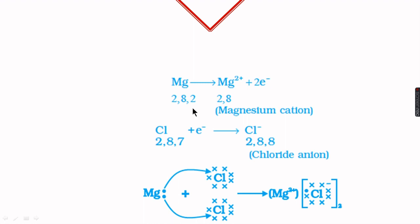Magnesium has two valence electrons and wants to lose them to form the Mg²⁺ ion. Chlorine wants to gain one electron to form the chloride ion. One magnesium can lose two electrons, but each chlorine requires only one electron, so for the bond formation we need two chlorine atoms.